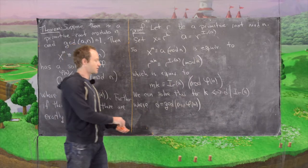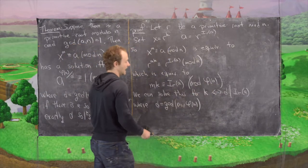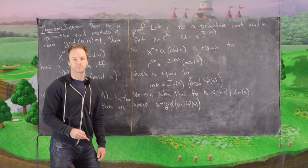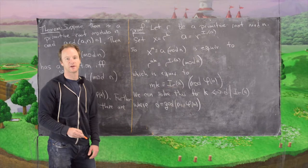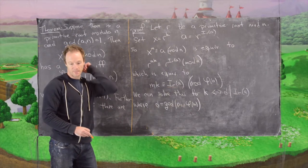We're taking the GCD of m with phi of n, and that has to divide this index. This should look familiar from the theory of solving linear congruences.